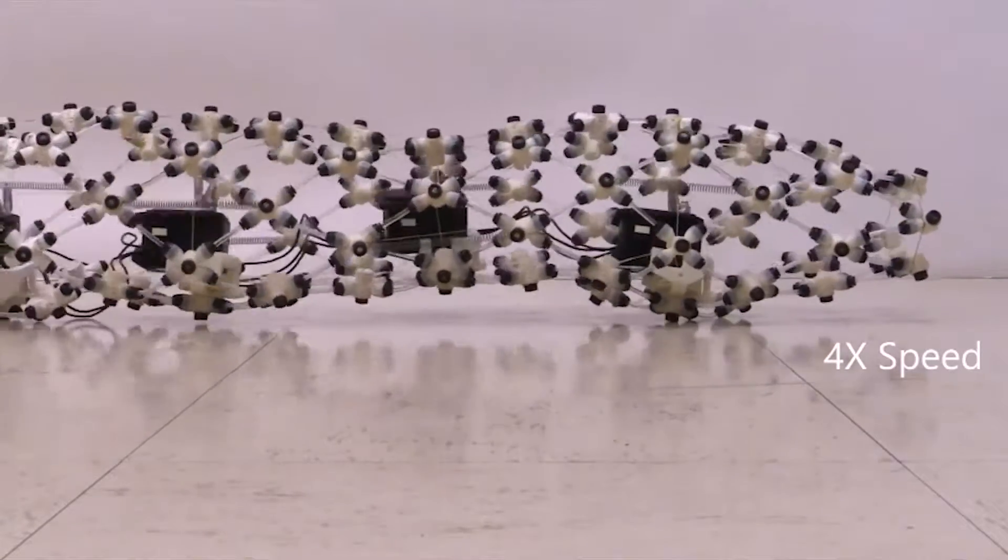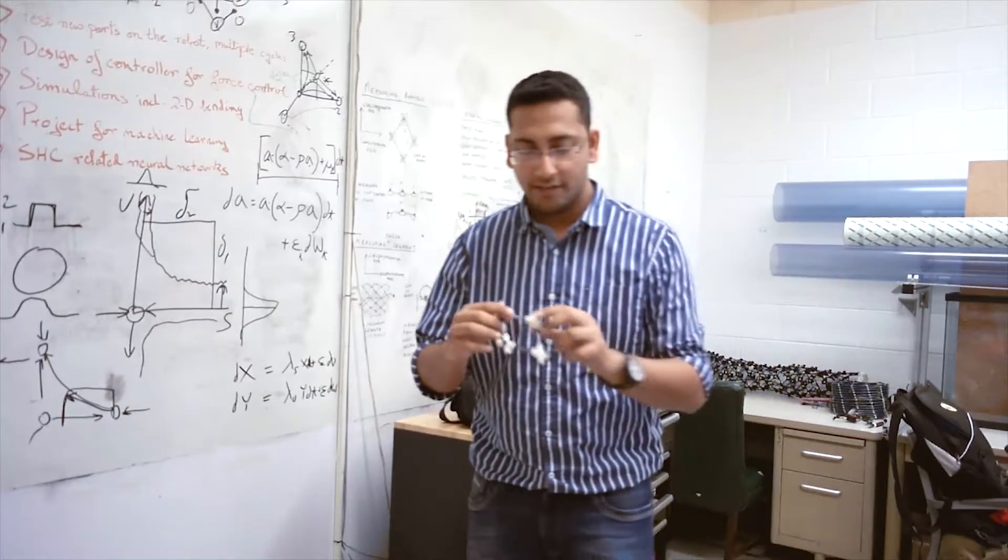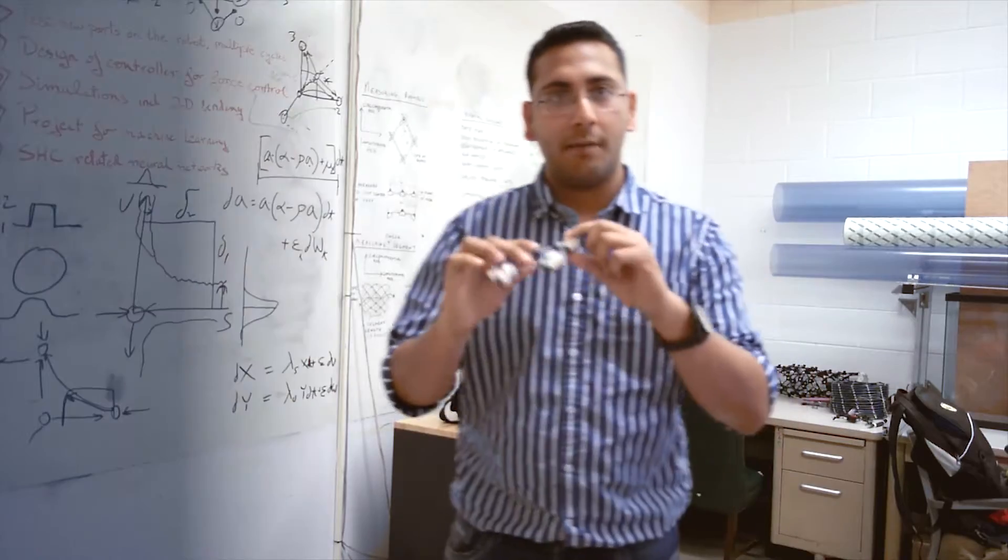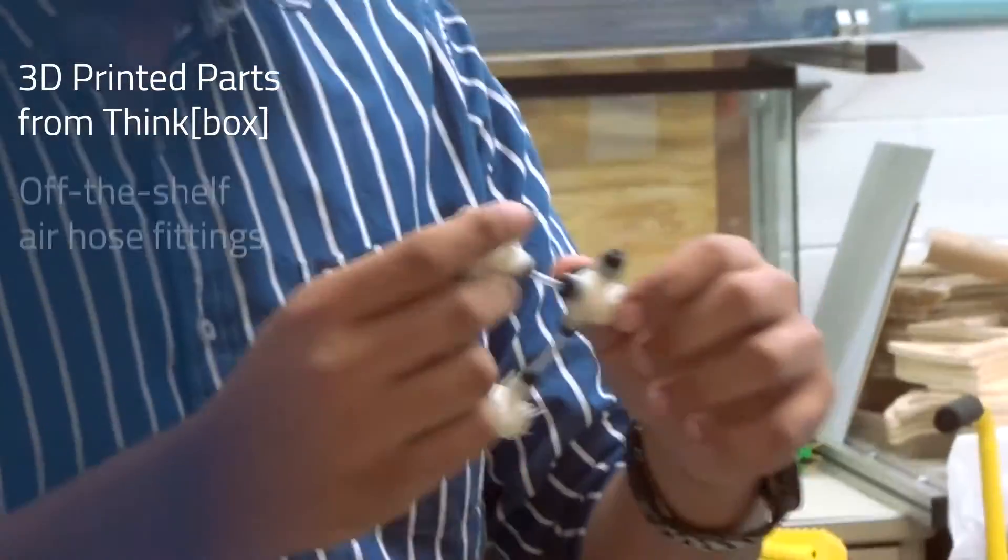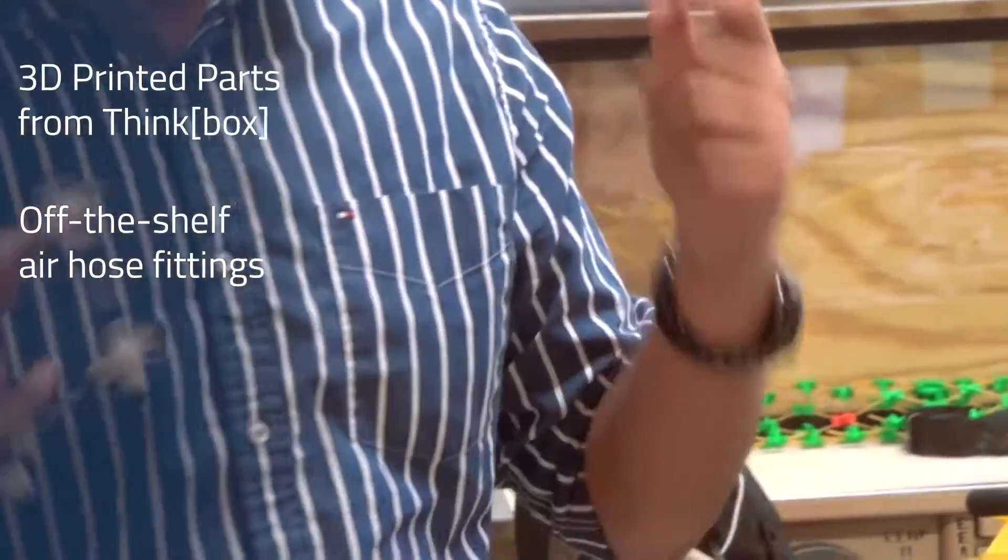So it's a soft robot. One of the cool things about this structure that we've designed, this mesh we have over here, is we use these 3D printed parts which we've printed in a Thingbox, and we use air hose fittings which allow us to connect two tubes together.